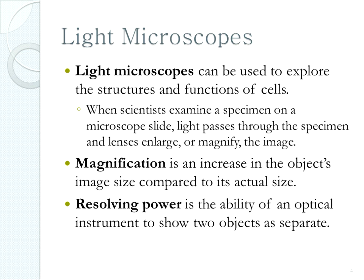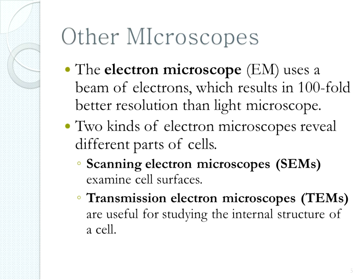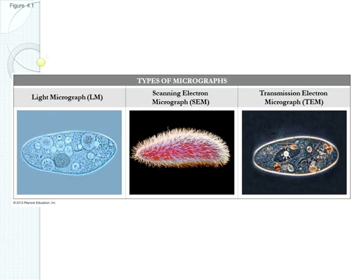The way we see cells is by using microscopes. There are two different kinds. One is a light microscope that passes light through a very thin specimen and lenses magnify the image. The other kind is the electron microscope, which uses a beam of electrons. We can either pass that beam through the specimen — that's transmission electron microscopy — or we can bounce the electron beam off the surface with scanning electron microscopy, which gives us a really good surface view of an organism.